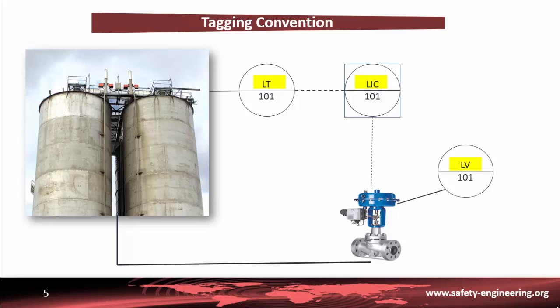The letters that make up the first few characters of a typical tag number — the leading letters — are used to identify the function performed by the field device or by the control system. Following this leading letter is a number, known as the loop number, which is used to uniquely identify one or more field devices used to perform a specific function. This combination of function letter and loop number enables a field device in a process area to be accurately identified.